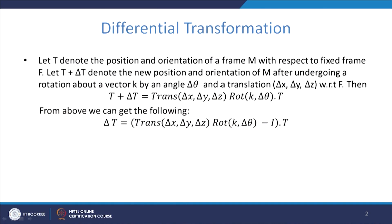Hello viewers. In this lecture we will see the velocity of a point in a coordinate frame and the velocity of a coordinate frame with respect to another coordinate frame using differential transformation. First, let us consider a moving frame M with respect to a fixed frame F, denoted by the homogeneous transformation matrix T.